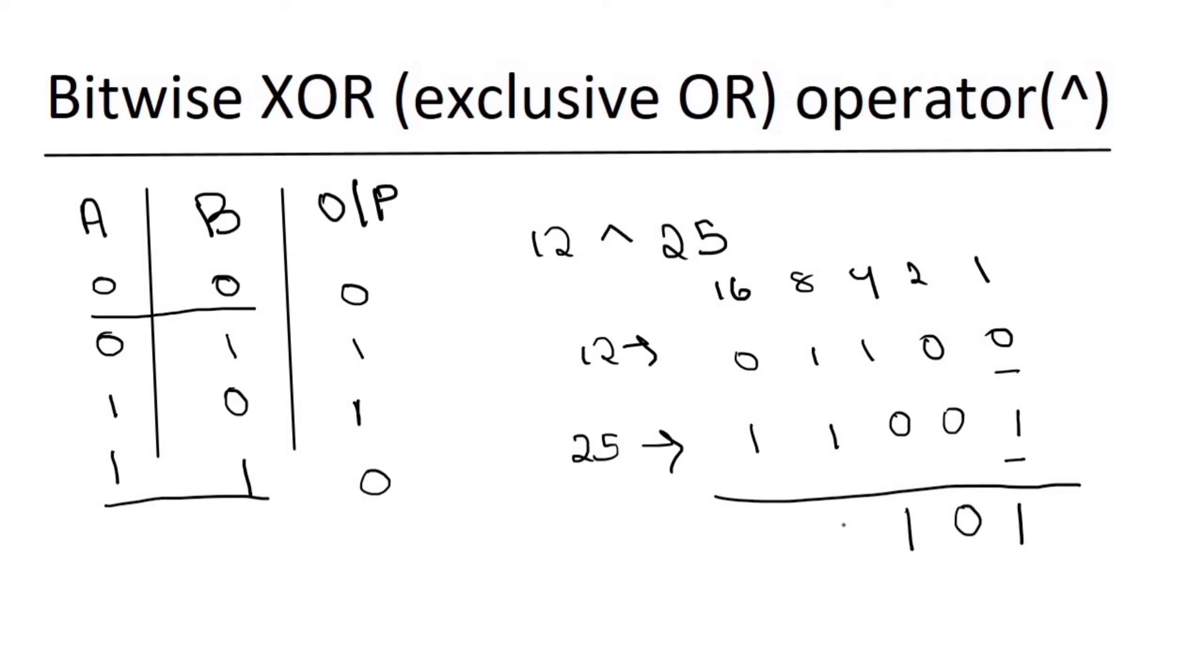1 0 output 1, 1 1 output 0, and 0 1 output 1. So the decimal equivalent is 16 plus 4 plus 1, that is 21.